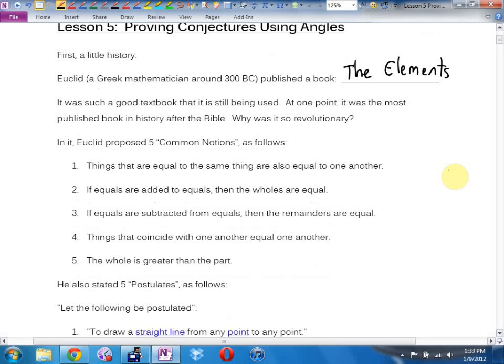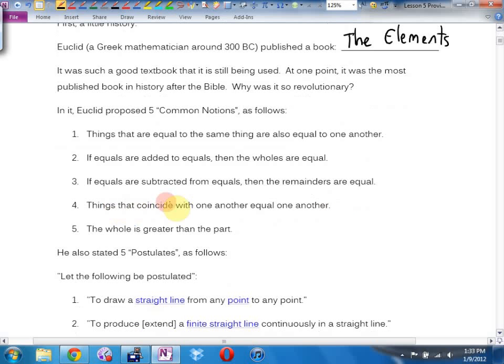In it, first of all, he started out by proposing what he called five common notions. What he really meant by this is that this seems obvious to me. I'm not going to prove this. These are the five. Things that are equal to the same thing are also equal to one another. Say what? If A equals B and C equals B, then A equals C. So I'm not going to prove that. If equals are added to equals, then the wholes are equal. If equals are subtracted from equals, then the remainders are equal. Things that coincide with one another equal one another. And the last one was, the whole is greater than the part.